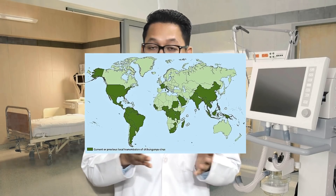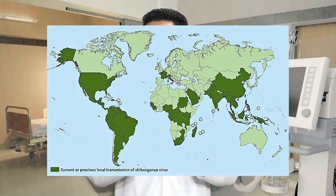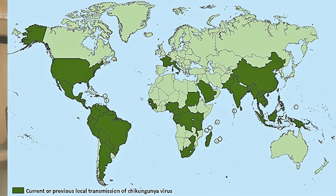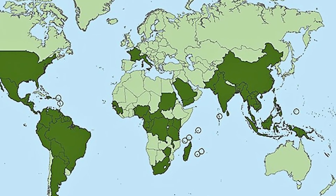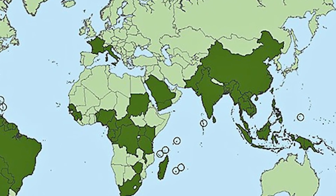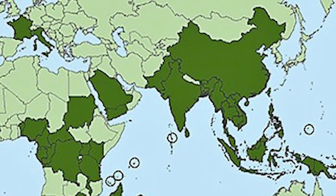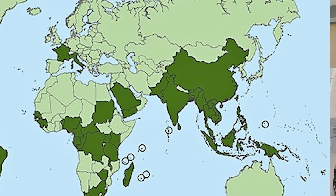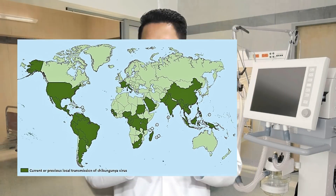This disease causes an estimated 3 million infections each year in more than 60 countries in Asia, Africa, Europe and the Americas. In India, last year in 2016 there were about 64,000 cases of Chikungunya, and this year alone the number of cases has crossed 22,000.